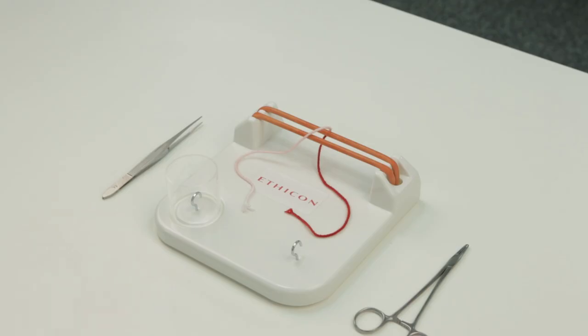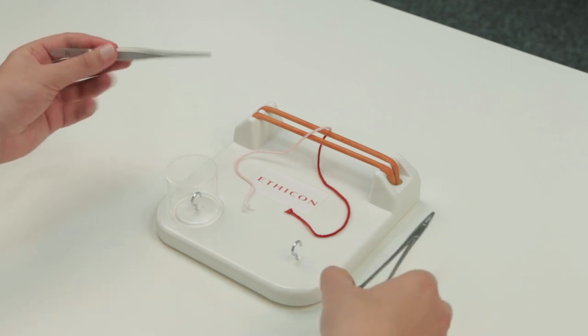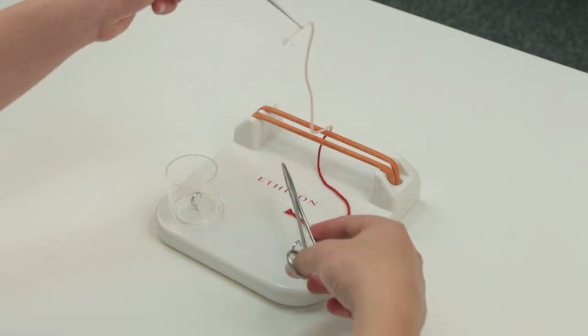For instrument tying, grasp the non-tying end of the suture with your forceps and loop it twice around your needle holder.